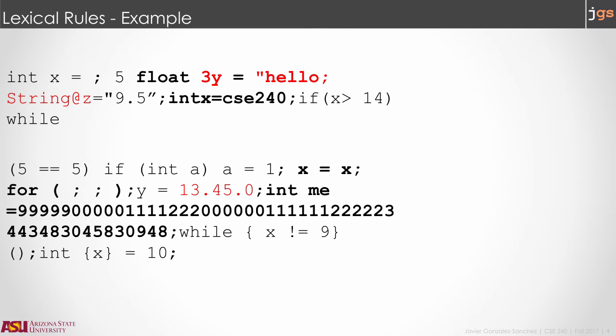The next error is because you cannot use the at symbol in Java — you cannot have it in the middle of an identifier, keyword, or anything else. Finally, there is an error because you can have one dot between the first two numbers, but a second dot makes it incorrect, since it is not an integer, not a floating point number, not an identifier, not a keyword. Because you cannot classify this combination of symbols in any defined category, you have an error.